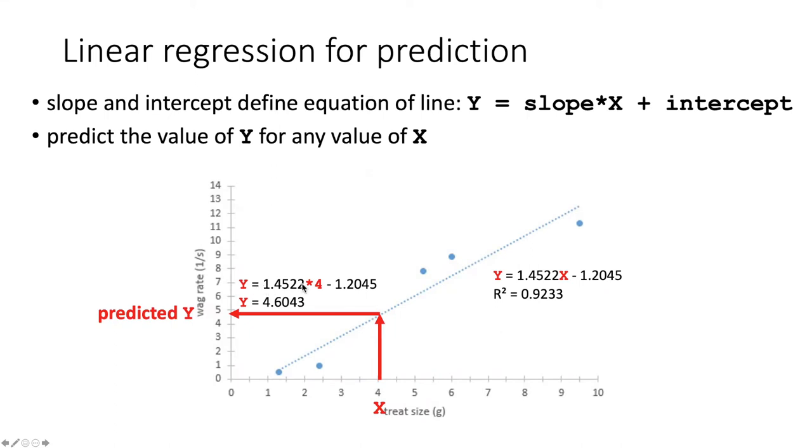Here we have substituted in the value for the slope and the intercept. That allows us then to substitute any value of x into the equation, and that will tell us the value of y.